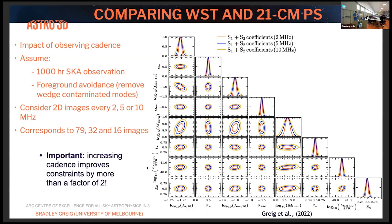If you have the full measured light cone, you can sample at much higher cadence than one image every 10 MHz. Considering foreground avoidance — where wedge modes are removed — the contours expand due to less information, but I considered different image cadences extracted from the light cone: one image every 10 MHz, 5 MHz, or 2 MHz. As you fold in more information, your ability to constrain astrophysical parameters improves. Going from 12 images to 80 images in the 2 MHz case, you see improvements of factors of 2 and 3.